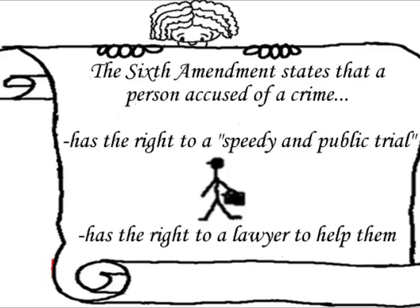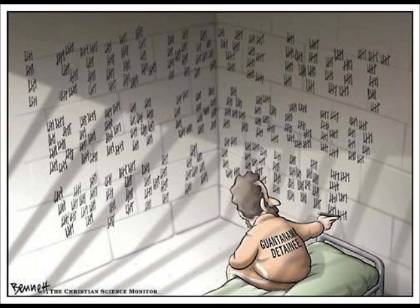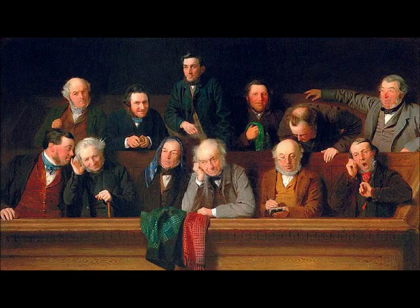The Sixth Amendment says: In all criminal prosecutions, the accused shall enjoy the right to a speedy and public trial by an impartial jury of the state and district wherein the crime shall have been committed, and to be informed of the nature and cause of the accusation, to be confronted with the witnesses against him, and to have compulsory process for obtaining witnesses in his favor, and to have the assistance of counsel for his defense. This amendment protects citizens on trial: they have the right to a swift and speedy trial, the right to see the person testifying against them, the right to an impartial jury, and Miranda rights such as the right to a lawyer.